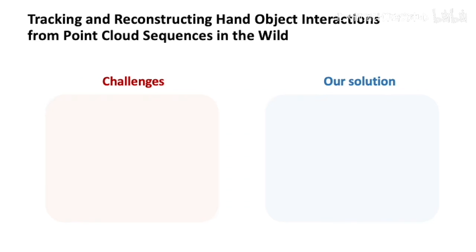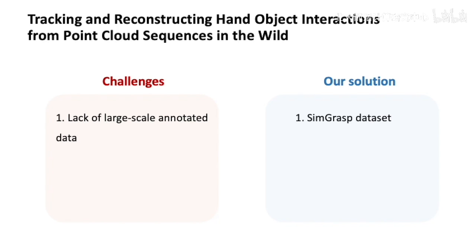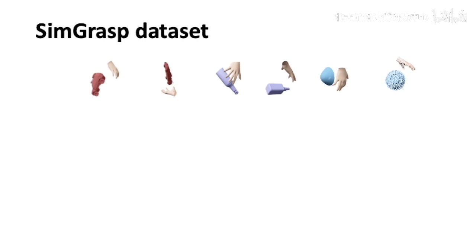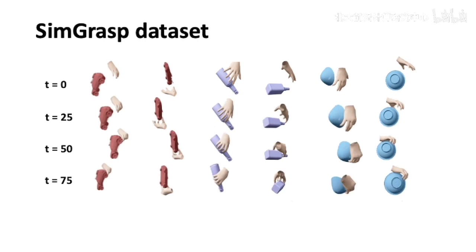For learning to track and reconstruct human-object interactions in the wild, the main challenge is the lack of large-scale diverse data with full annotations. To mitigate this problem, we generate a realistic and diverse simulated dataset, which we call SimGrasp. SimGrasp contains hand-object interaction sequences covering diverse hand and object instances, as well as dynamic grasping motions.